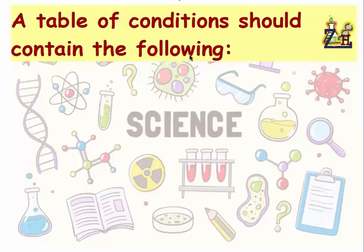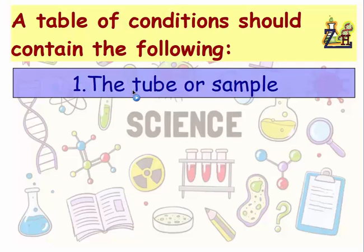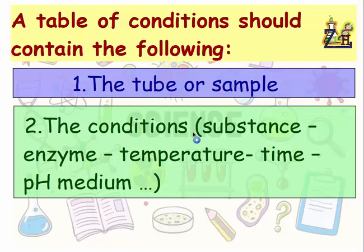A table of conditions should contain the following. First, the tube or sample, conditions such as substances, enzymes, temperature, time, pH medium, etc.